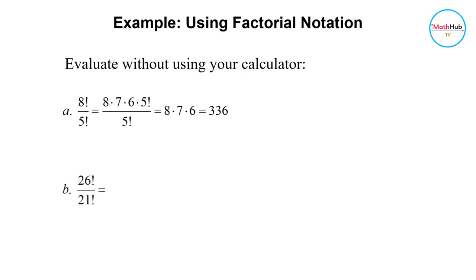Now let's take a look at letter B. Let's evaluate 26 factorial divided by 21 factorial. We will write 26 factorial as 26 times 25 times 24 times 23 times 22 times 21 factorial. Since the denominator is also equal to 21 factorial, we can cancel 21 factorial from the numerator and denominator.